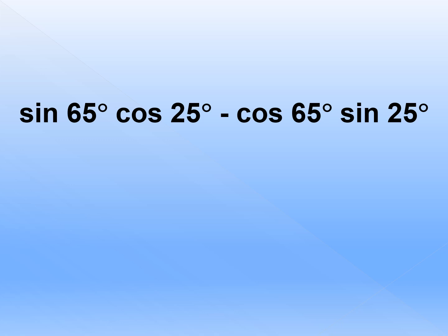For instance, we have sin65·cos25 minus cos65·sin25. It follows the pattern sin, cos, cos, sin, so we're going to have sine. Since the operation on the middle term is minus, we're going to subtract a and b. Our value of a is 65 and the value of b is 25. 65 minus 25 is 40. Therefore, it is the same as sine40 degrees.